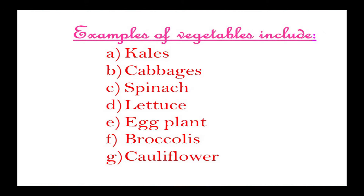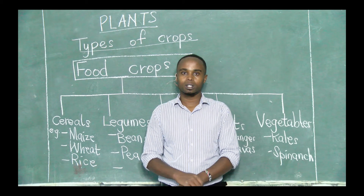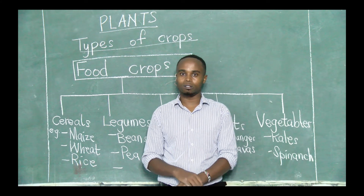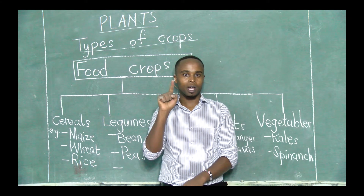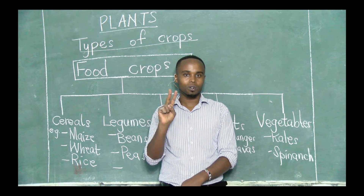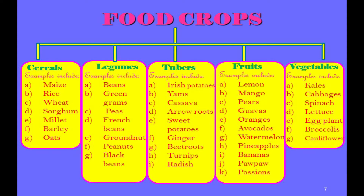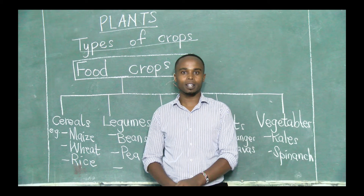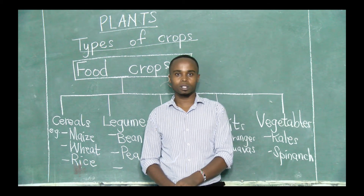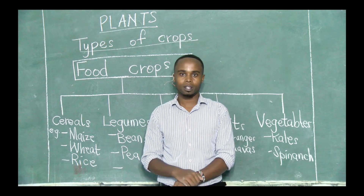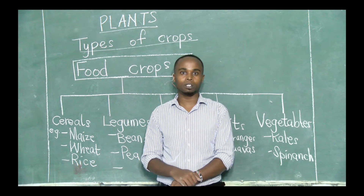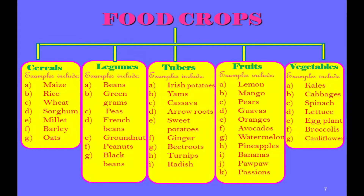So we have seen several examples of food crops. Food crops are classified or divided into five groups: number one, we have cereals; number two, we have legumes; number three, we have tubers; number four, we have fruits; number five, we have vegetables. As we move up, we will learn the importance of those groups and what they provide our bodies with — that will be our next part. For now, make sure you can recall the examples and write them down in your books.